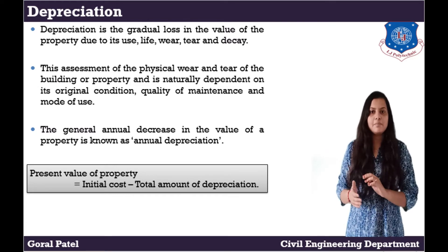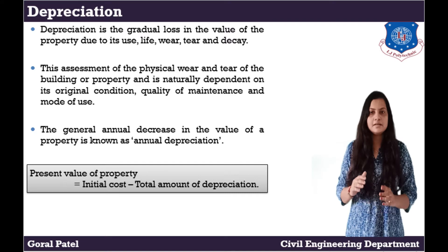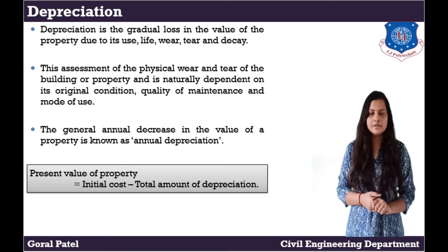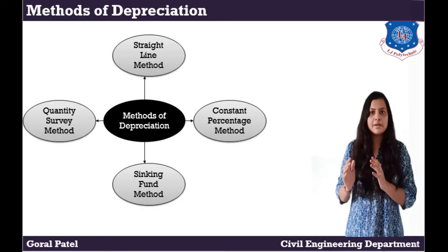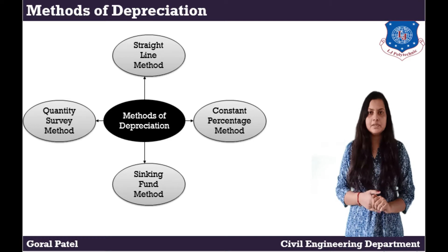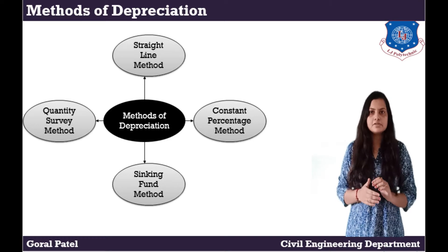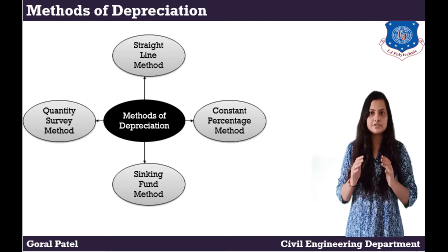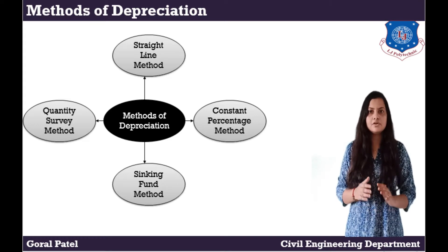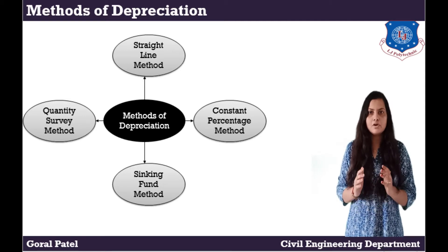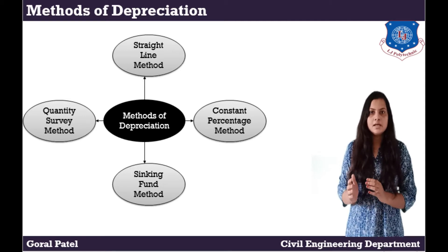Present value of the property is equal to initial cost minus total amount of depreciation. Next, methods of depreciation. There are various methods of calculating depreciation: straight line method, constant percentage method, sinking fund method, and quantity survey method.